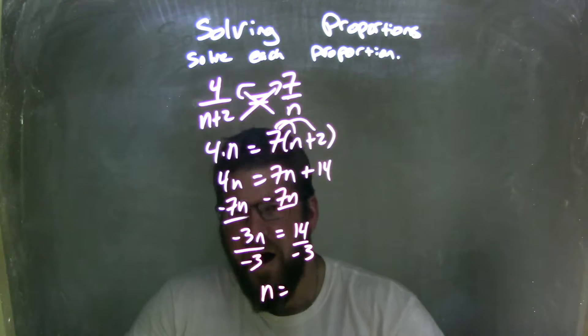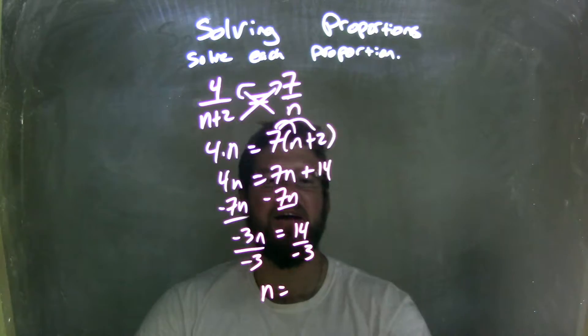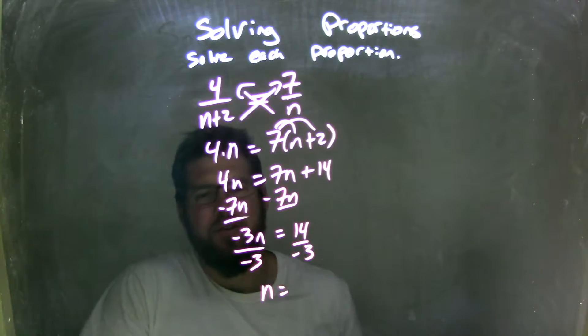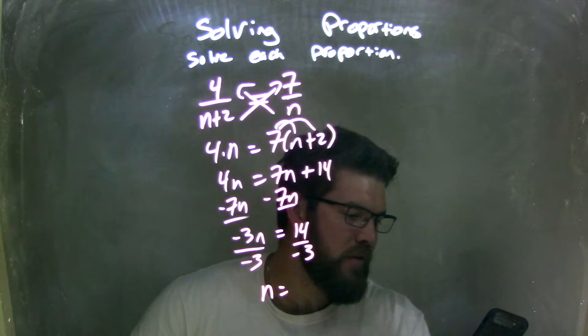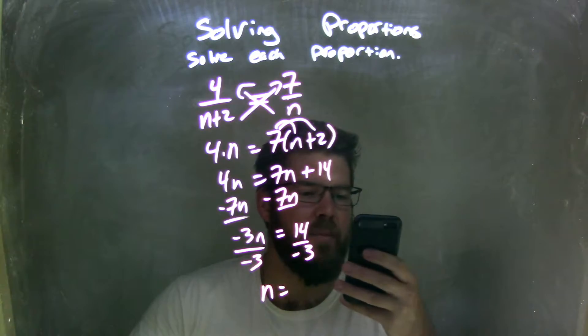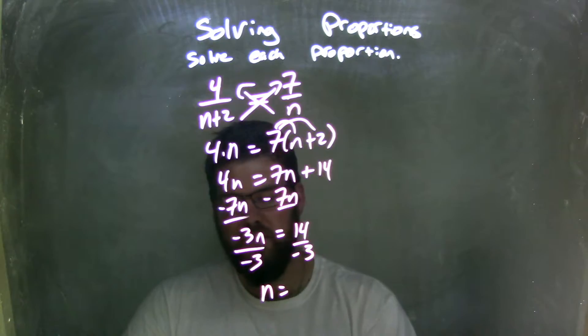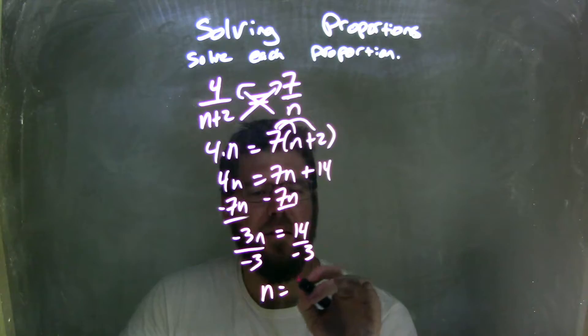We can do our long division here. If you know off the top of your head, that's going to be negative 4 and 2 thirds or 4.66. So, let's use our calculator here. 14 divided by 3 comes out to be 4.6666 repeating, but it's a negative.